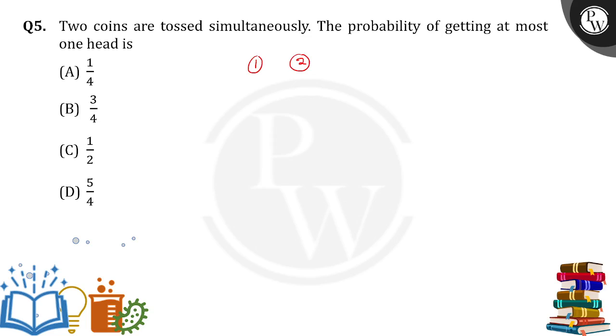We have two possible outcomes: head or tail. Okay, so if the first coin is head and the second coin is tail, and next time what is the second probability?